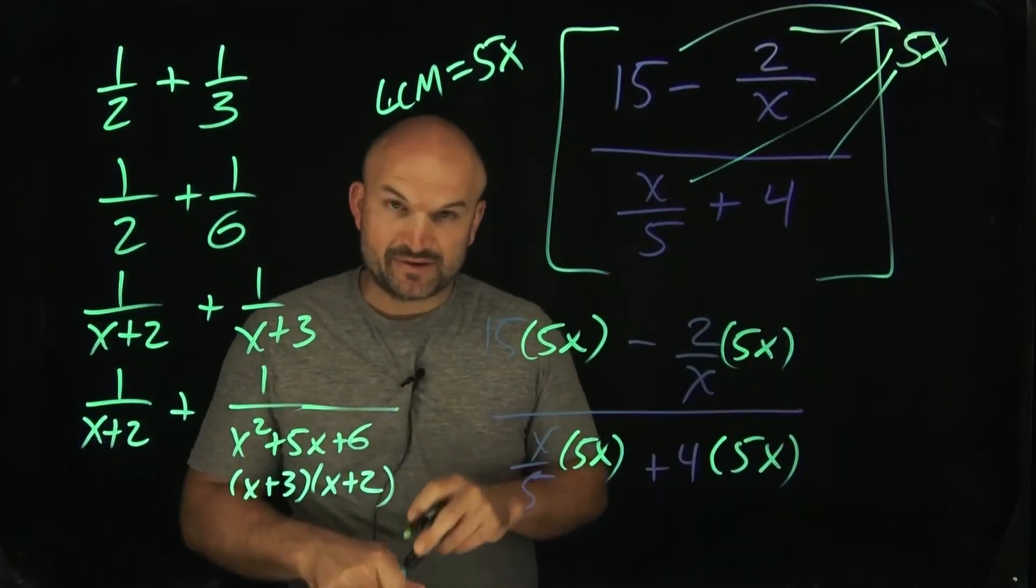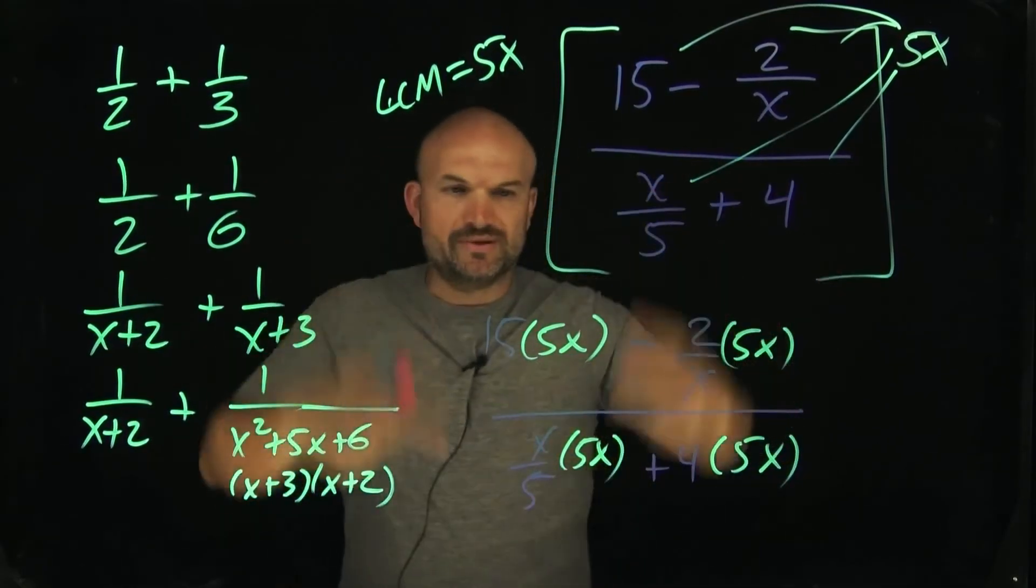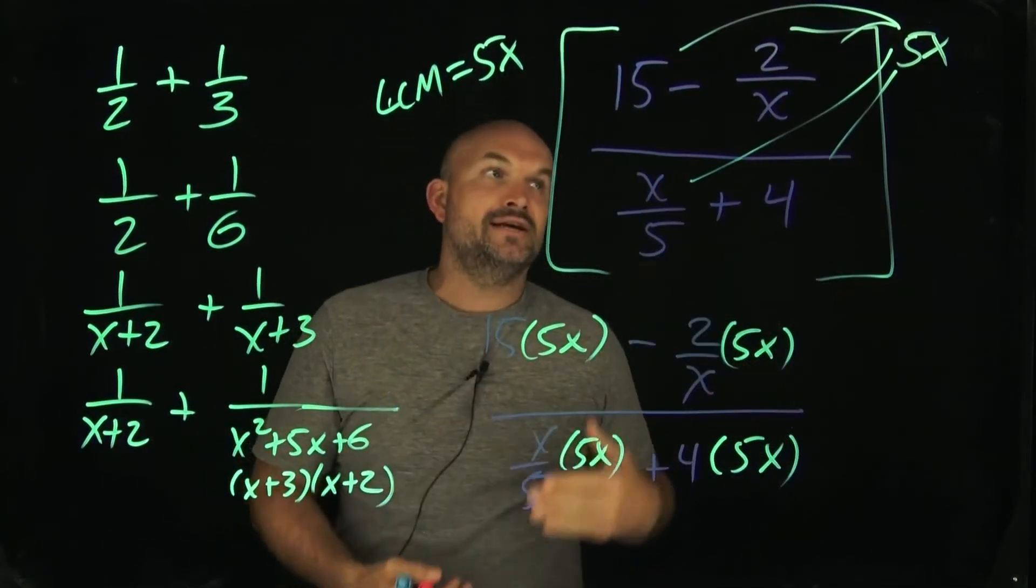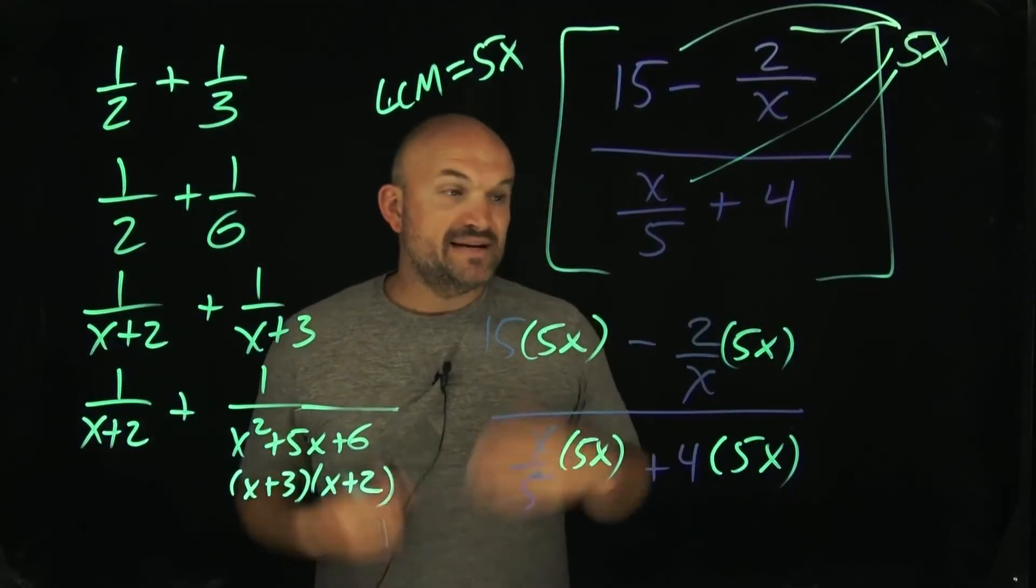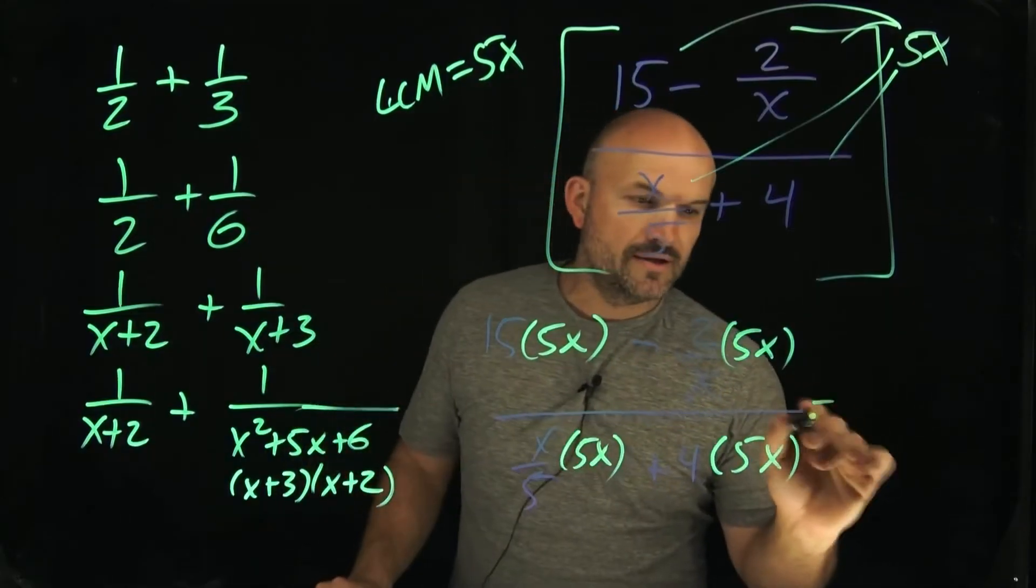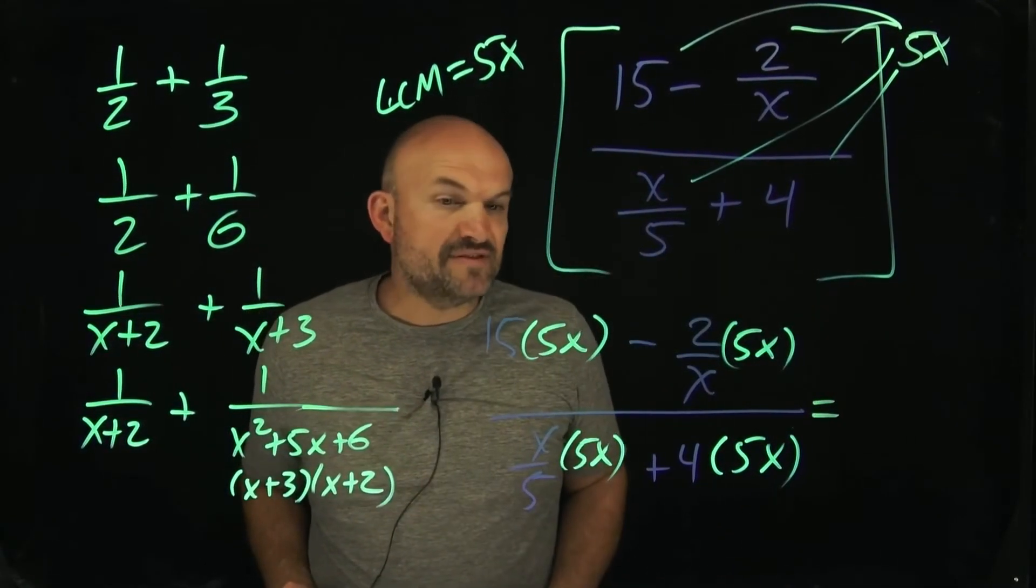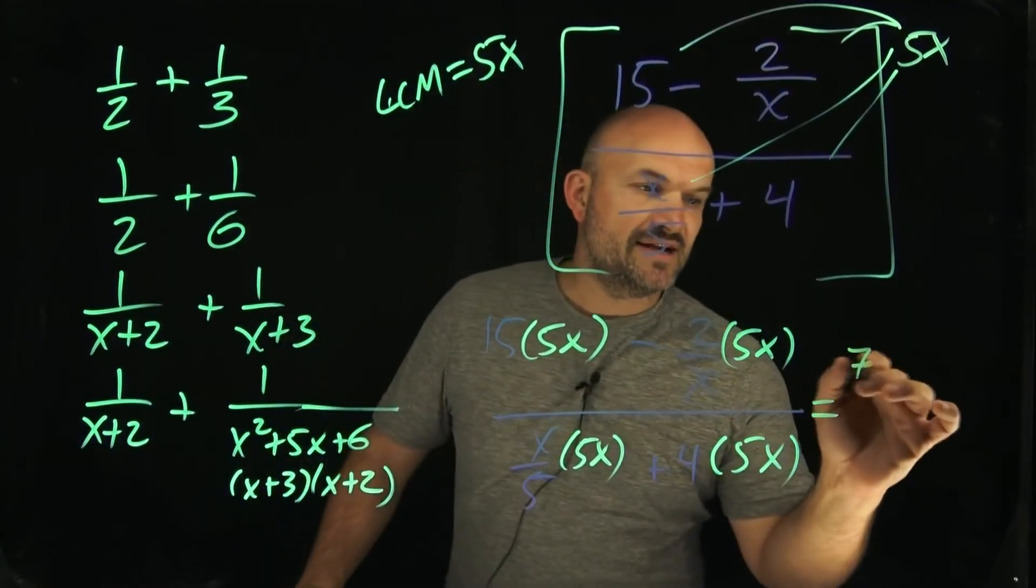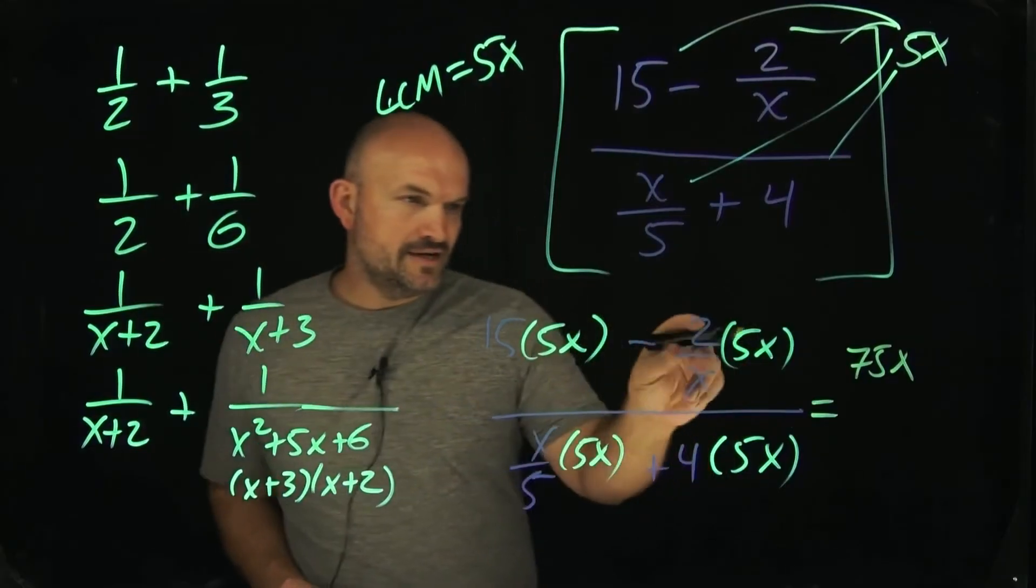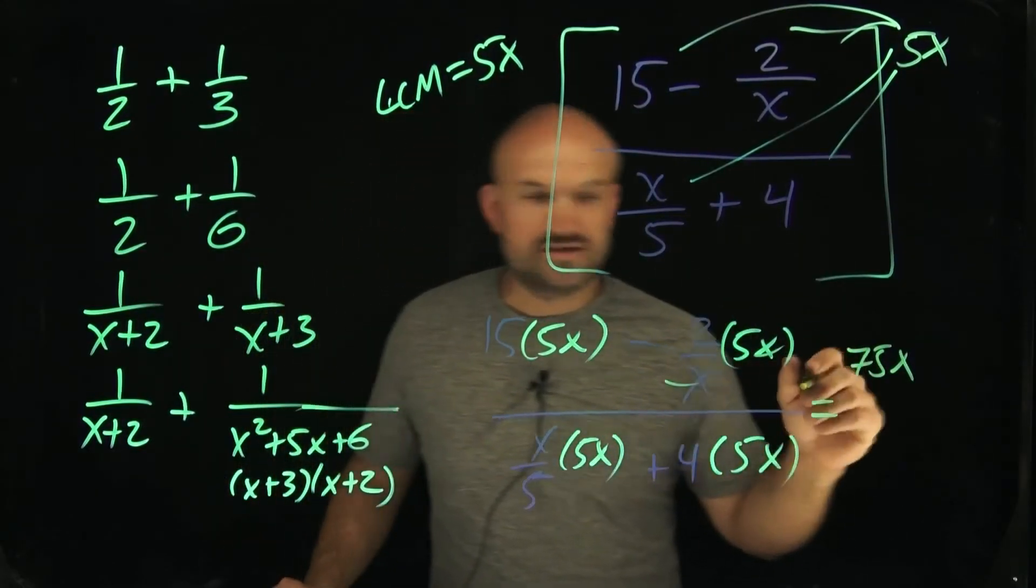So now you can see I destroyed everything. The more experience you get with complex fractions, you can start doing some of this in your head. You don't have to actually multiply all this stuff out. But now what we need to do is just go ahead and simplify to see what our final answer is going to be. In this case, you can see I have a 15 times 5. So 15 times 4 is going to be 60, so that'd be a 75x. And then here, the x's now are going to divide out. Therefore, it's a negative 2 times 5, which is going to be a negative 10.